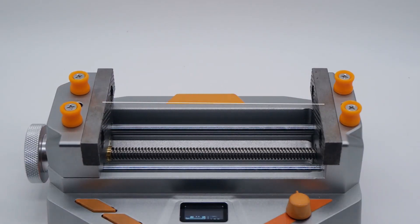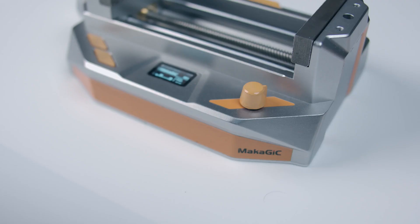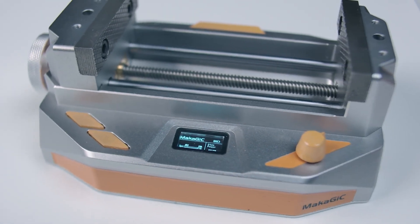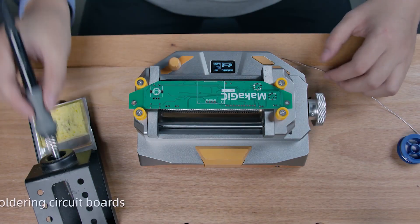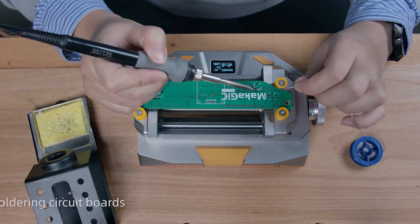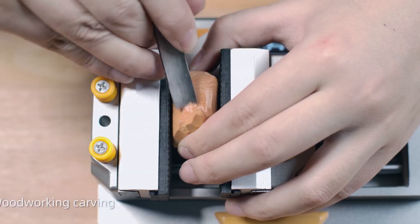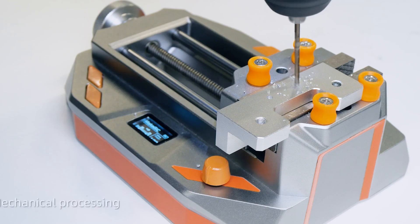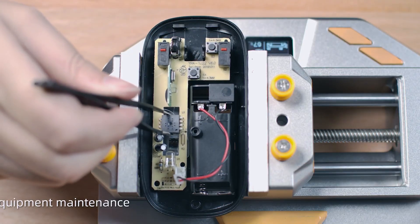Its clamping distance is up to 125mm. McAgic can adapt to most daily clamping work, whether it's soldering circuit boards, woodworking carving, mechanical processing, equipment maintenance, and more.